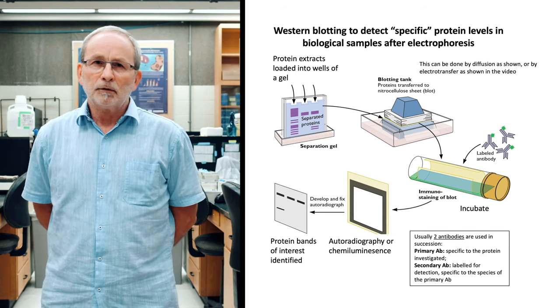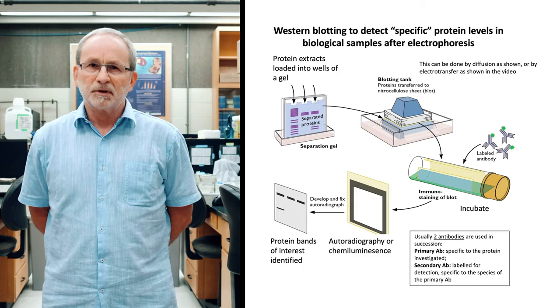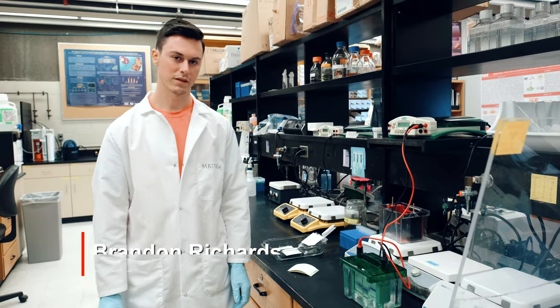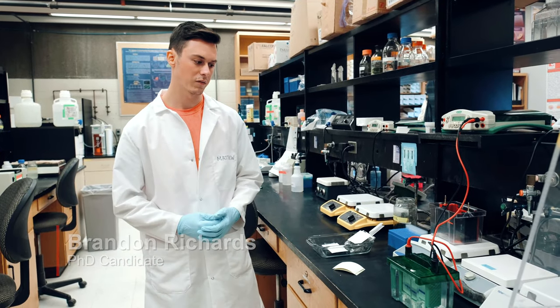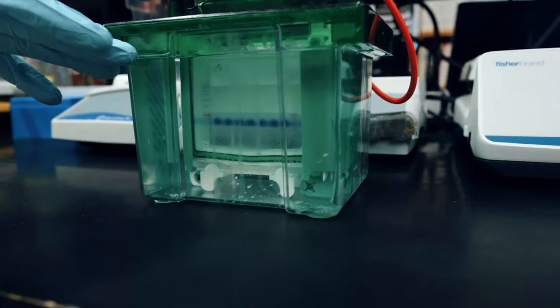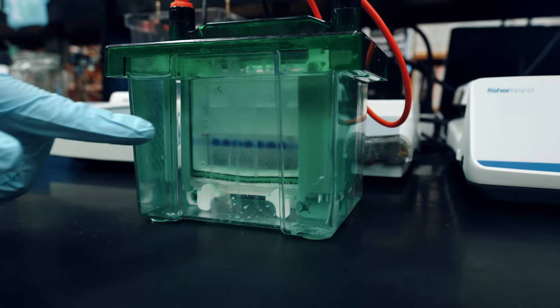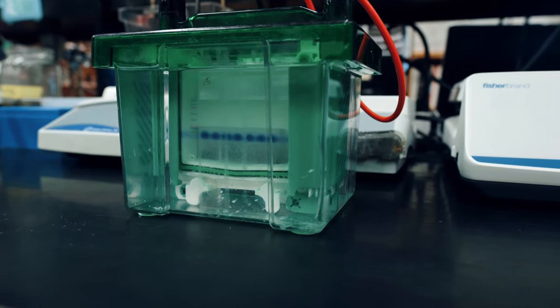One of the most popular techniques in muscle exercise physiology these days is Western blotting, or immunoblotting. This method allows you to measure specific proteins and how they change with exercise, with training, or with muscle disuse — a very powerful technique. Brandon is going to explain how we do it in this lab. The first step is running your gel, which separates proteins based on size — larger proteins on top, smaller proteins at the bottom. You can see here an example of proteins running across the gel; we're about halfway through the running process.